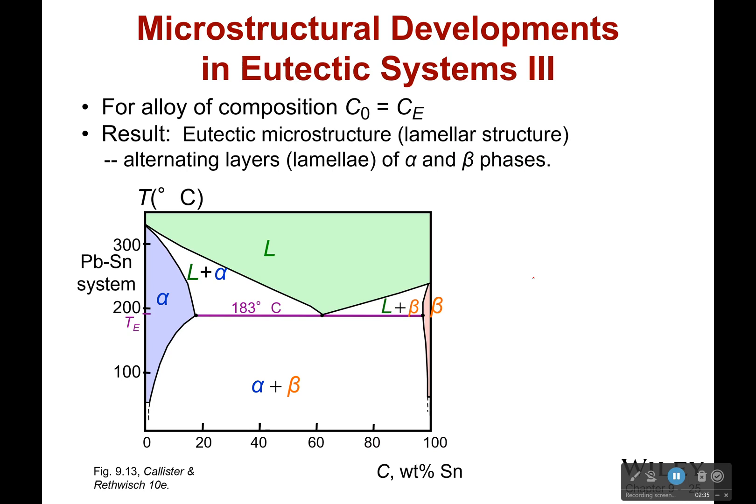Okay, let's look at one other point, and this is when we're at that eutectic point. So when we're at a eutectic point, we create something that is amazing. It's a eutectic microstructure, and it's called a lamellar structure because it's going to have these alternating layers, or lamellae, of the alpha and beta phases. And this is amazing, this is really good, because there's a lot of beneficial properties at these eutectic points.